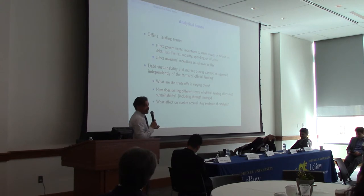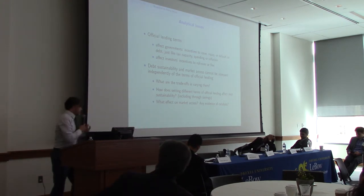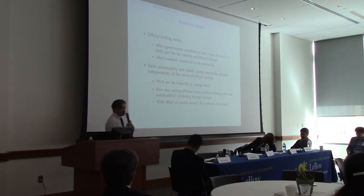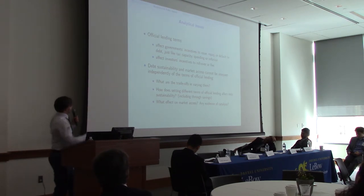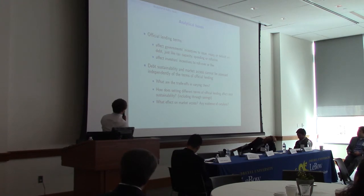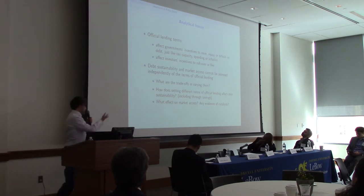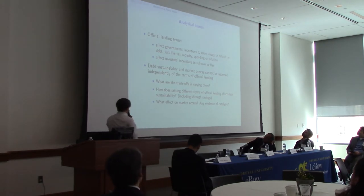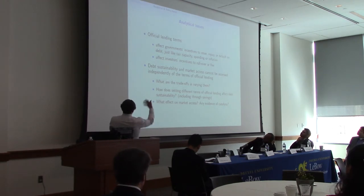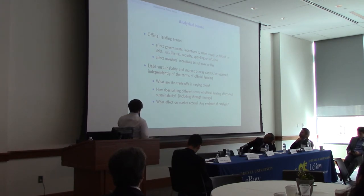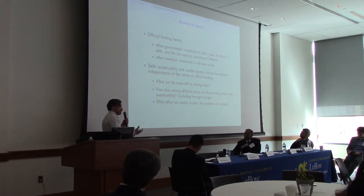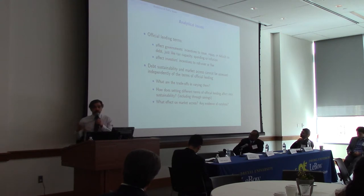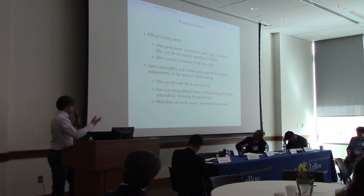Existing theory on official lending tells us it does two things: it affects governments' incentives to default — similar to how tax revenues, growth, or inflation do; and it affects investors' incentives — whether they will roll over the debt or move to another country. We want to understand whether there are trade-offs: does a positive effect on government default incentives come with a negative effect on investors? Does playing with official loan conditions affect the willingness to default or investors' incentives to roll over during stress?